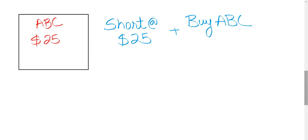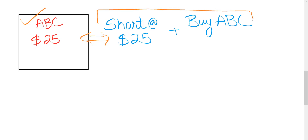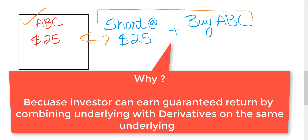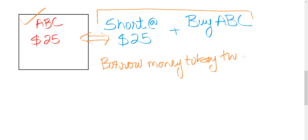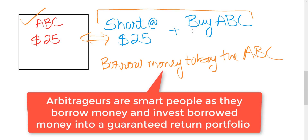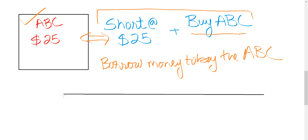If the contract is selling for a higher price than the no-arbitrage price, the investor can earn arbitrage by taking a short position in this contract at $25 and buying the underlying ABC from the market at the start of the contract. This strategy will help the investor earn an arbitrage return. In this example, we are analyzing from the perspective of a person who wants to earn arbitrage, so assume that the investor will borrow money to buy the underlying ABC.